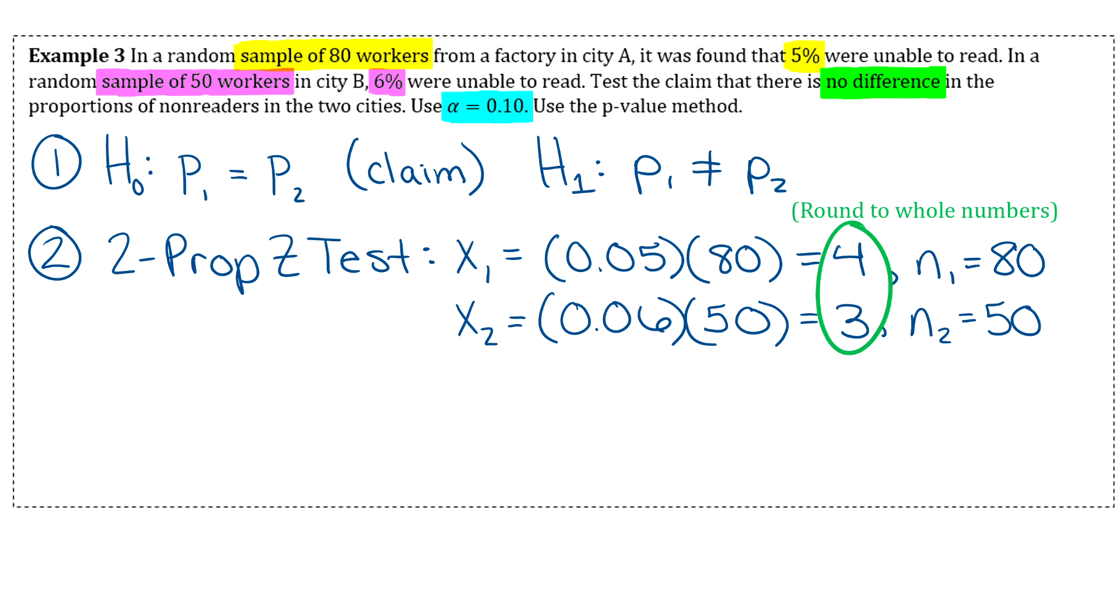If you do not get a whole number when you're figuring out those amounts, you need to round those to whole numbers before you put them into two prop Z test. If you don't, if you try to do a decimal, it'll give you a domain error, and that just means that they need to be whole numbers.